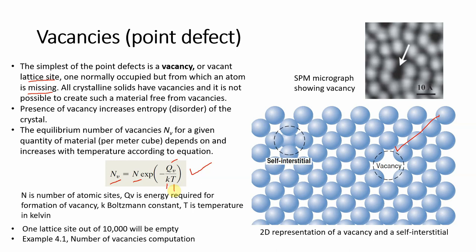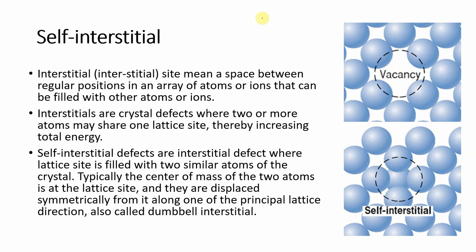Using this equation you can compute the number of vacancies — as shown in Example 4.1. In this slide we saw that if an atom is missing from its periodic arrangement, that is called a vacancy. This vacancy can also be seen using a micrograph. Self-interstitial: interstitials are sites — meaning a space between regular positions in an array — that can be filled with other atoms or ions. This space, as shown in the figure, is called an interstitial.